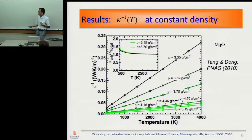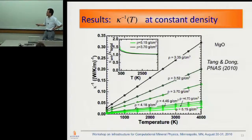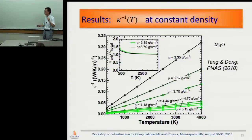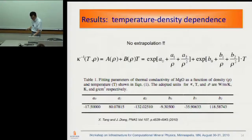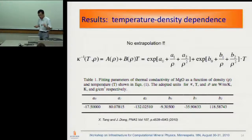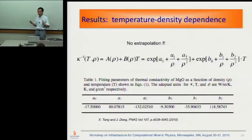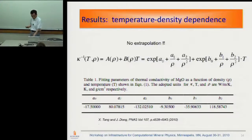We can directly do calculations over a wide temperature and density range. We find it very interesting that the temperature dependence at constant density — not constant pressure, that's the point — fits nicely with a linear plot. It doesn't go to the origin because we can see the isotope effect. From there we can generate a model of the density and temperature dependence of the lattice thermal conductivity of MgO. The key message is no extrapolation — we do direct calculations over the temperature and pressure conditions relevant to earth science.